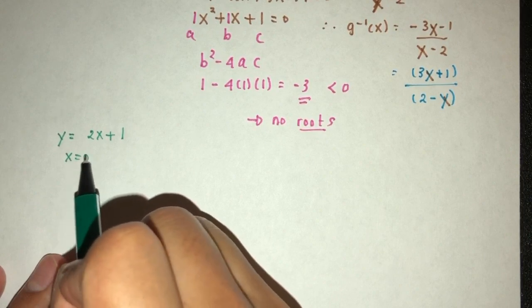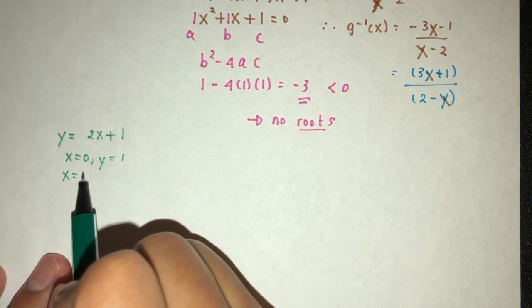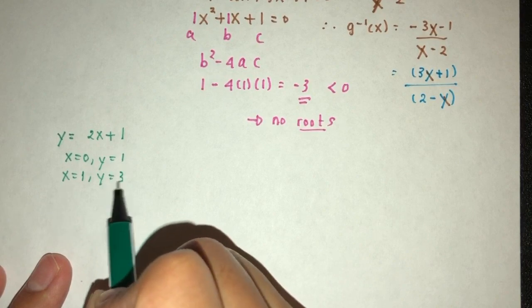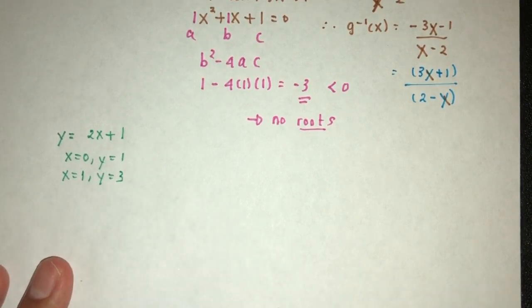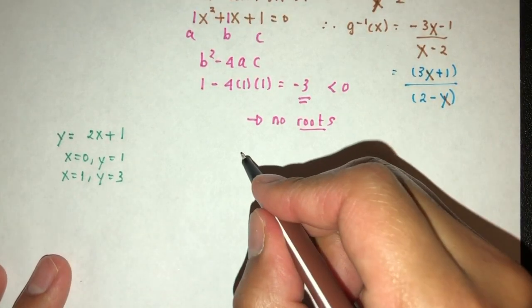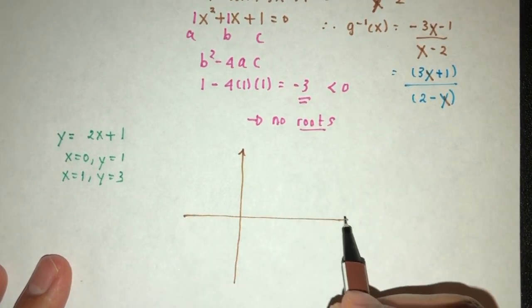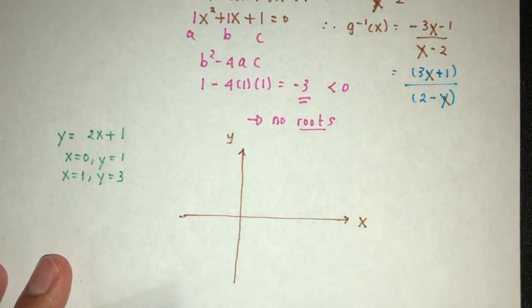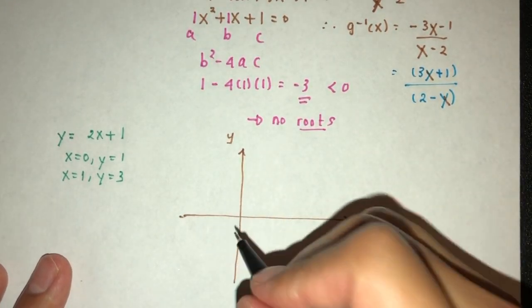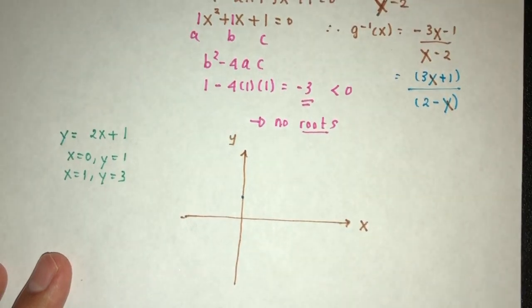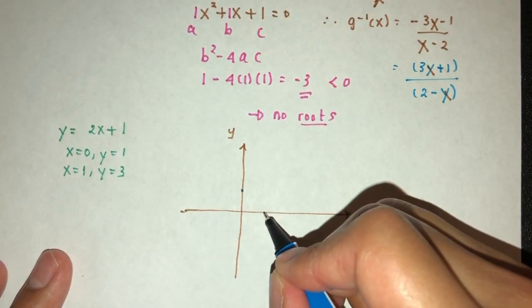When x equal to 0, y will be 1. x equal to 1, y will be the value of 3. We have two passing points, we can form that straight line. This is the y-axis and the x-axis. The first point, let's say it's here, for example, and the second point, let's say it's somewhere over here.